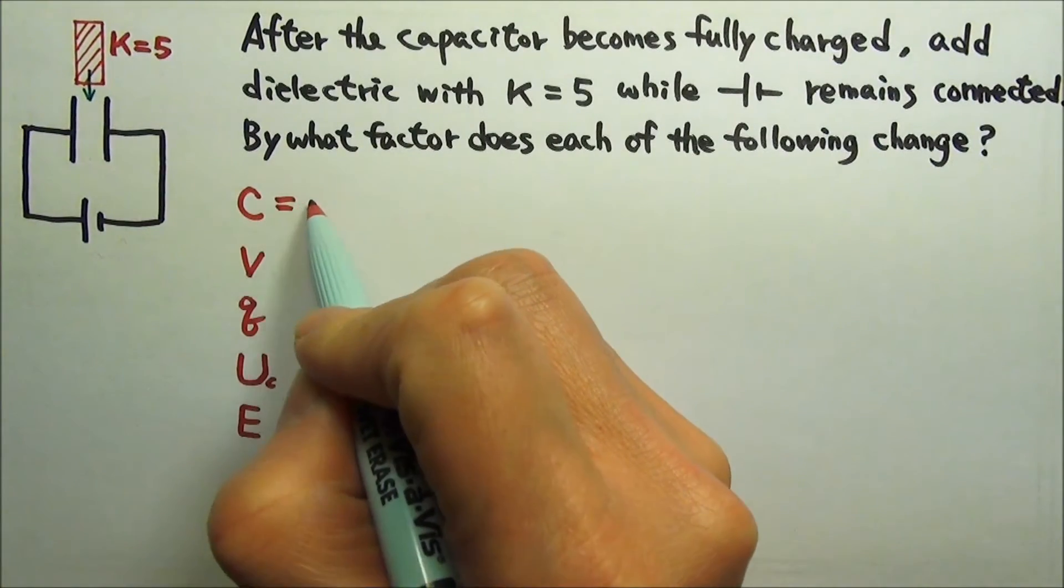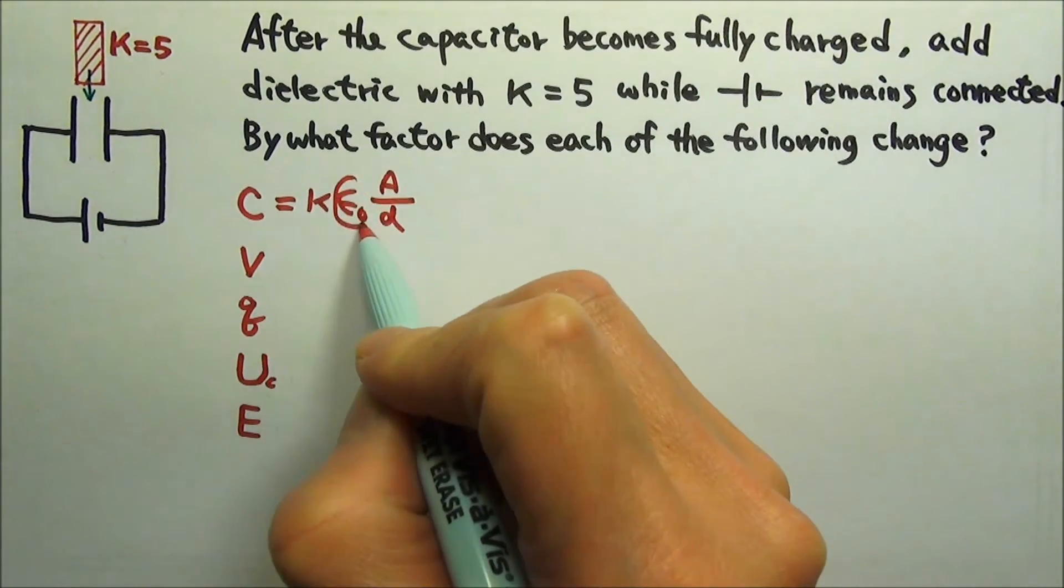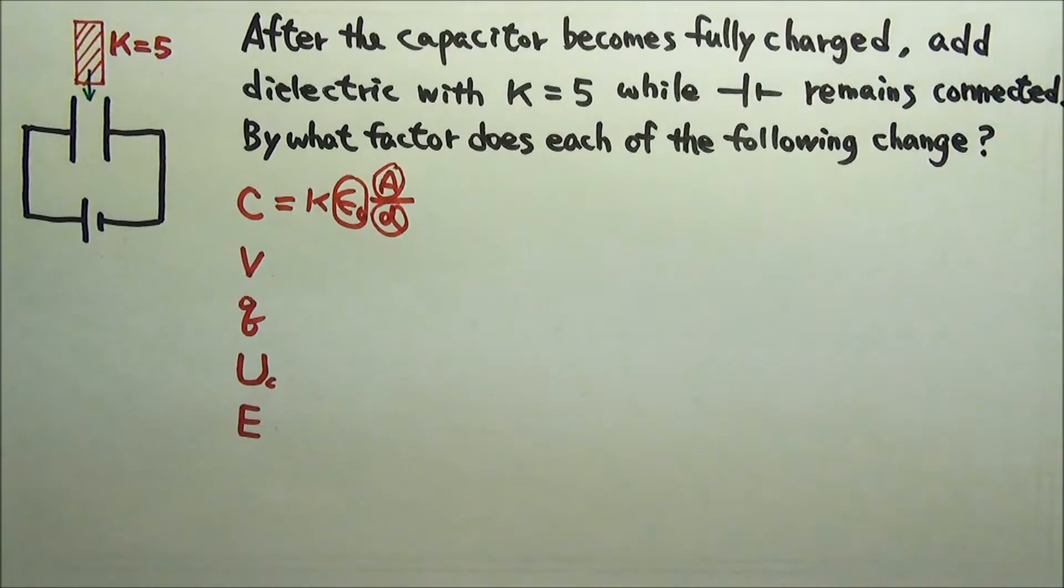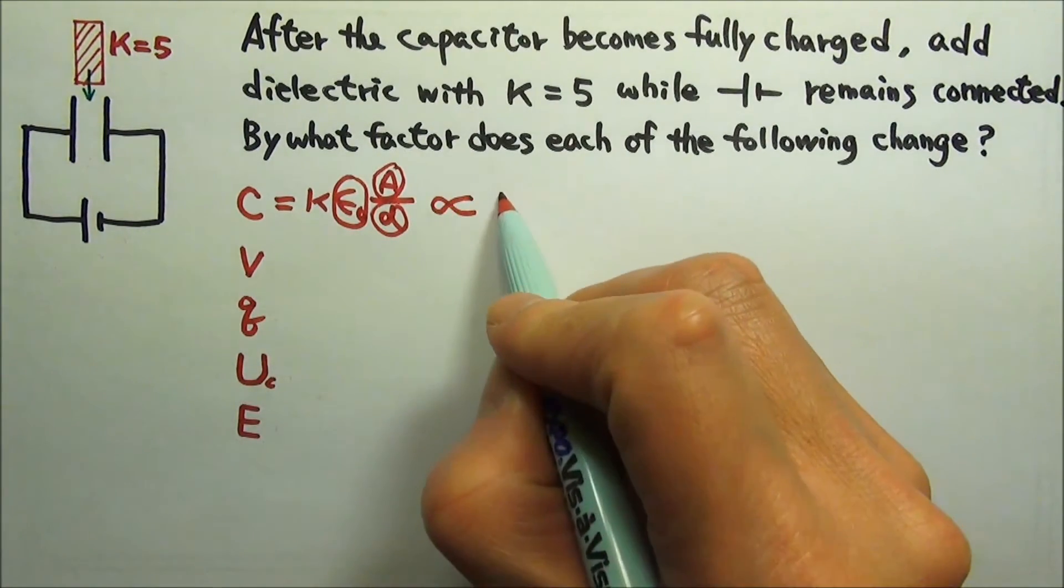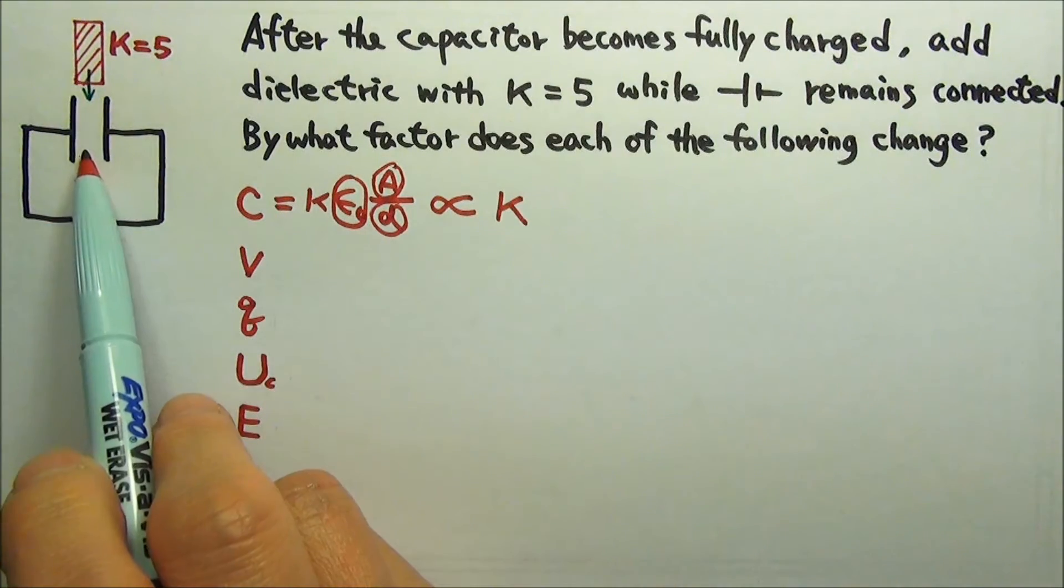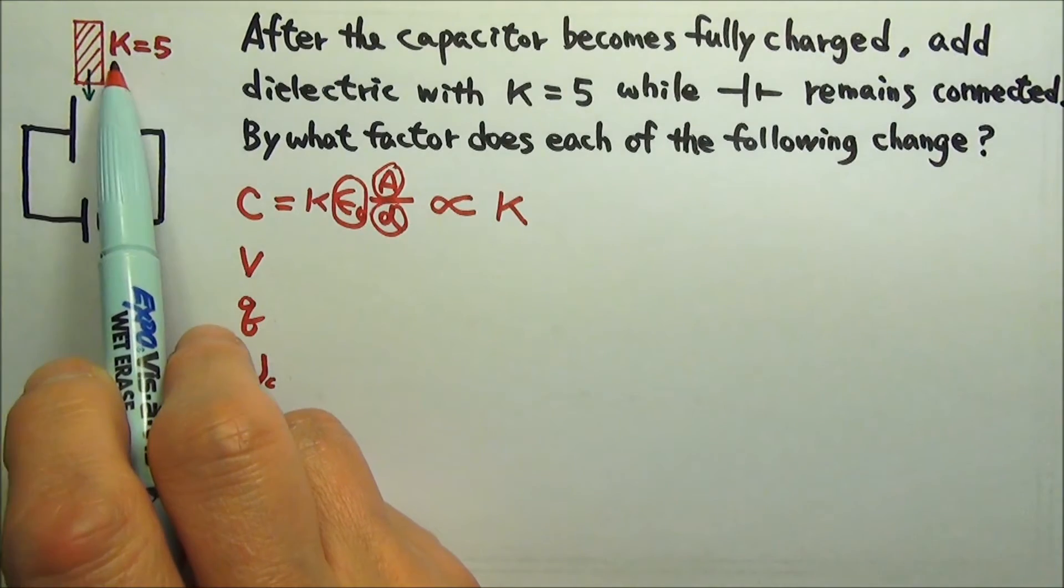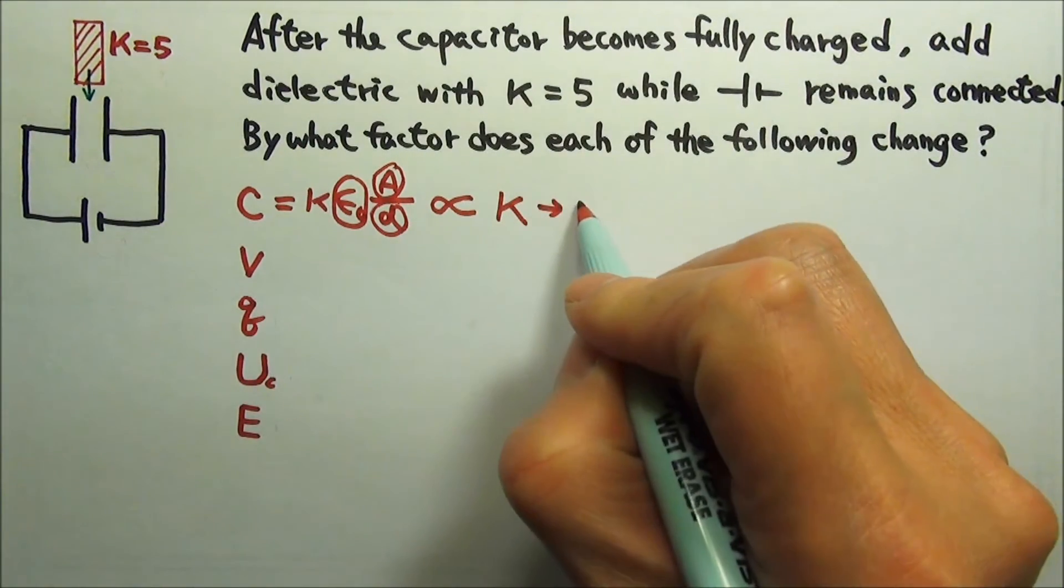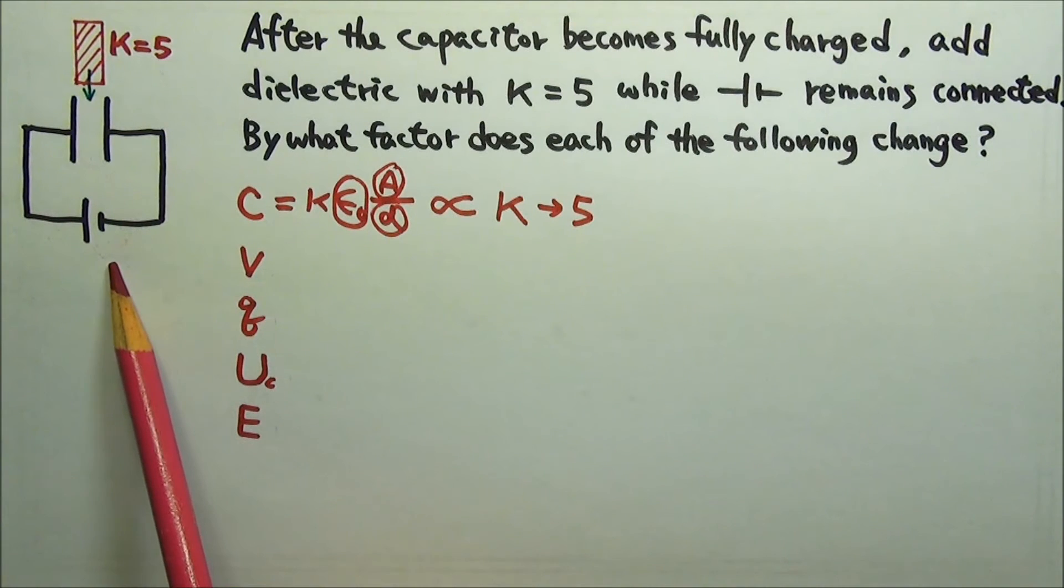C equals kappa times epsilon naught A over D. Epsilon naught is always a constant. Right now the A and the D both stay the same, which means capacitance is proportional to kappa. Without the dielectric material kappa is 1. With the dielectric material the kappa is 5, so kappa changes by a factor of 5, therefore the capacitance changes by the same factor 5.